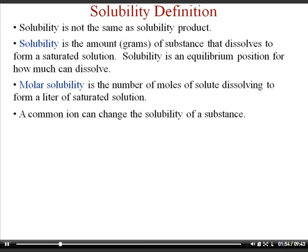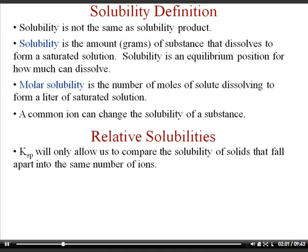The common ion effect does affect salts and decreases their solubilities. Just as it prevents weak acids or weak bases from dissociating as much, a common ion will prevent a slightly soluble salt from dissolving. You can compare the solubility of one salt to another just by looking at the KSP values, as long as they break apart into the same number of ions.